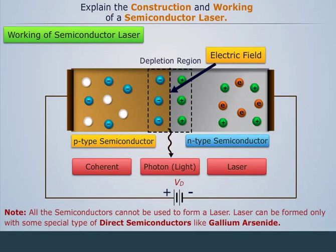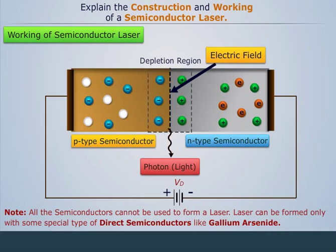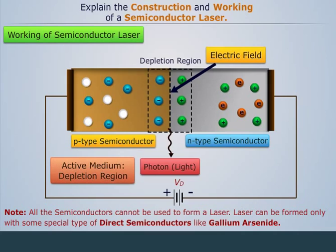Note that all semiconductors cannot be used to form a laser. Laser can be formed only with some special type of direct semiconductors like gallium arsenide. Also note that in a semiconductor laser, usually its depletion region is considered as the active medium and the forward biased current is considered as the pump.